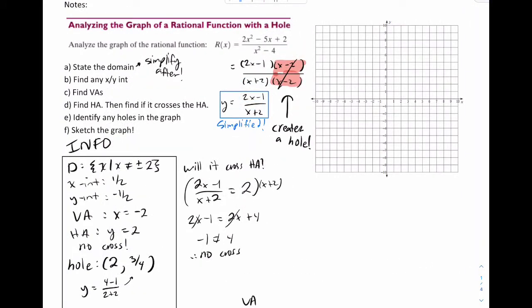So to start this graph, let's put our asymptotes down. We have x equals negative 2. That's right here. We have y equals positive 2, right here.